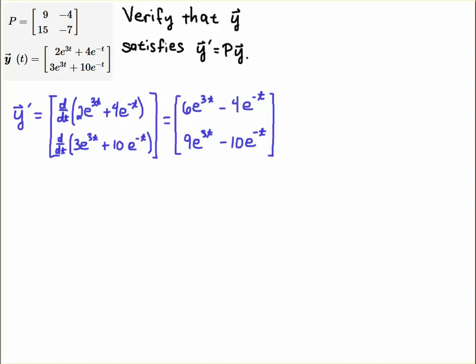That's the easy part. The next part is to multiply P times y, so we're going to take this matrix, multiply it by this vector, and then simplify it and hopefully verify that we get this result, and actually we will get that result.